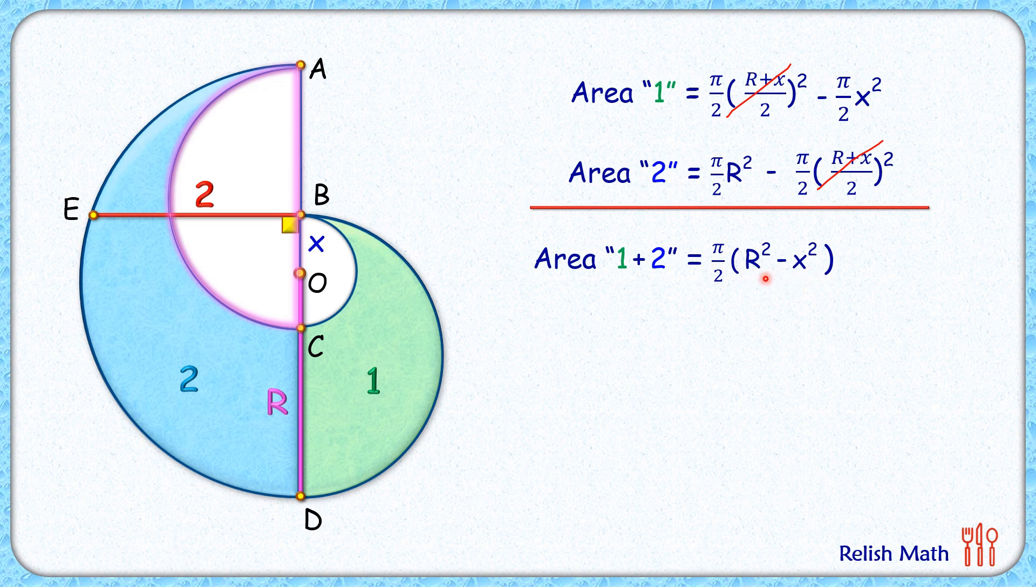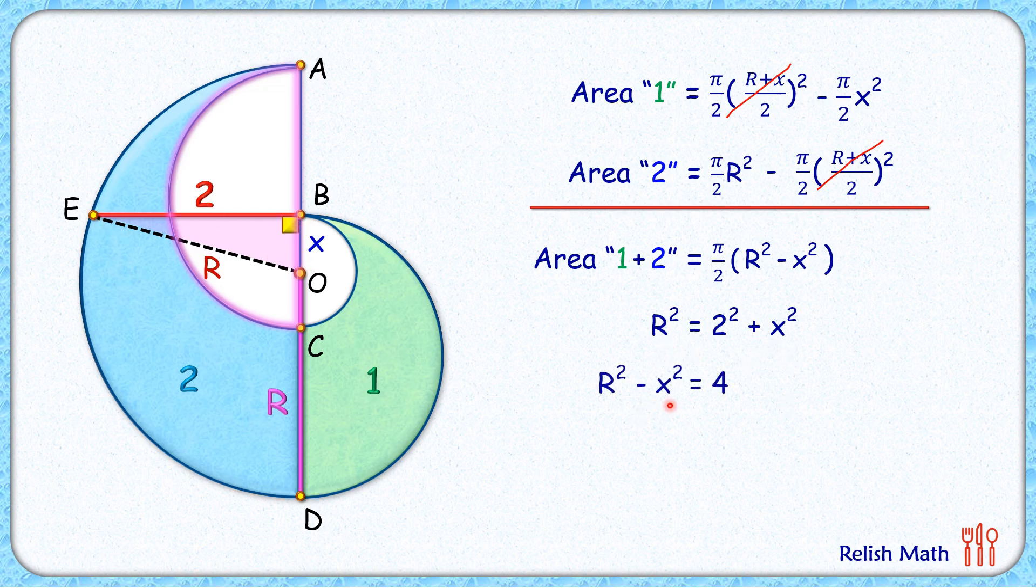So now we need to find the value of r² - x². For that let's join EO here. EO is same as the radius of big semicircle, so EO length is r cm. Now in this triangle EBO applying Pythagorean theorem we'll get r² = 2² + x². Taking x² to the other side we'll get r² - x² = 4.